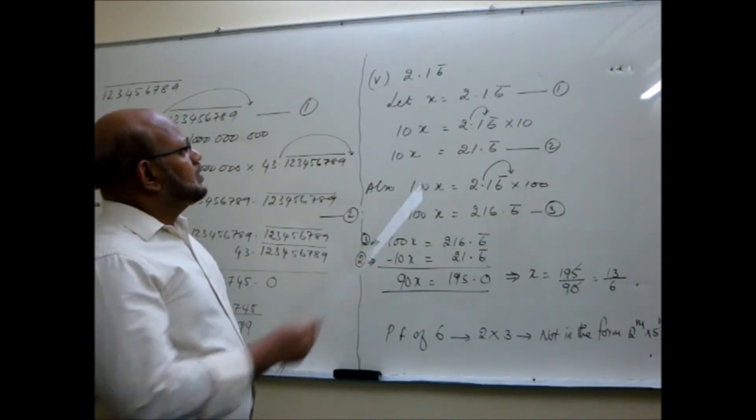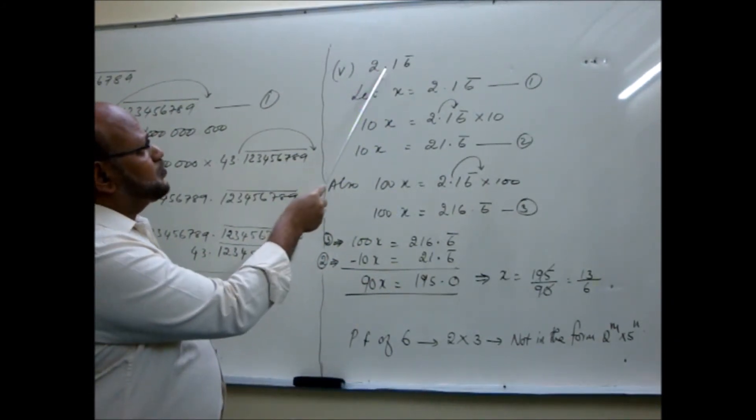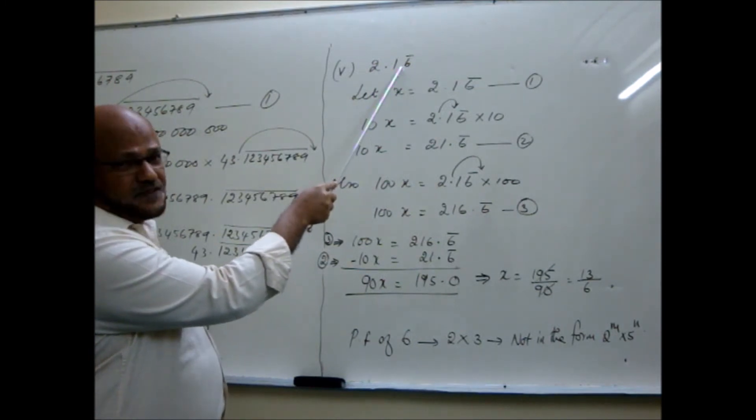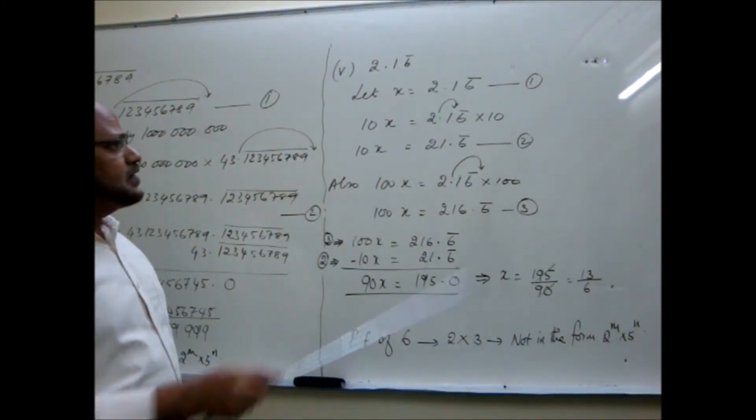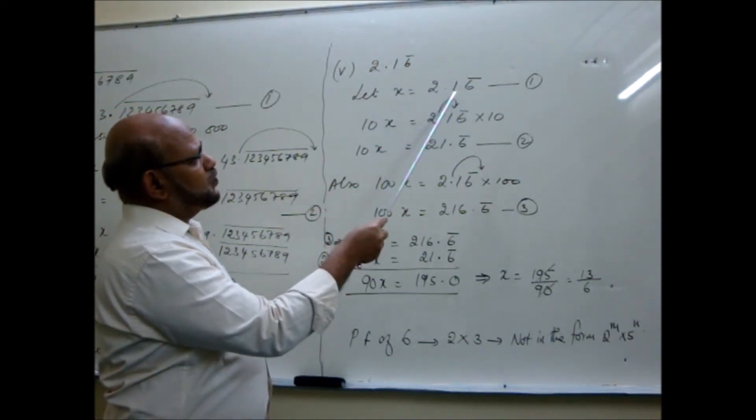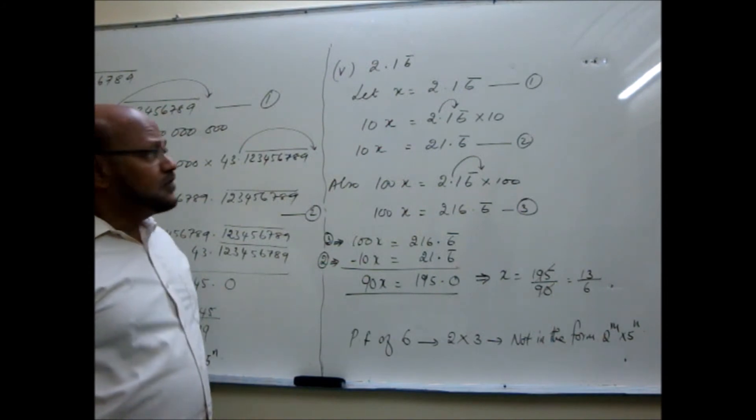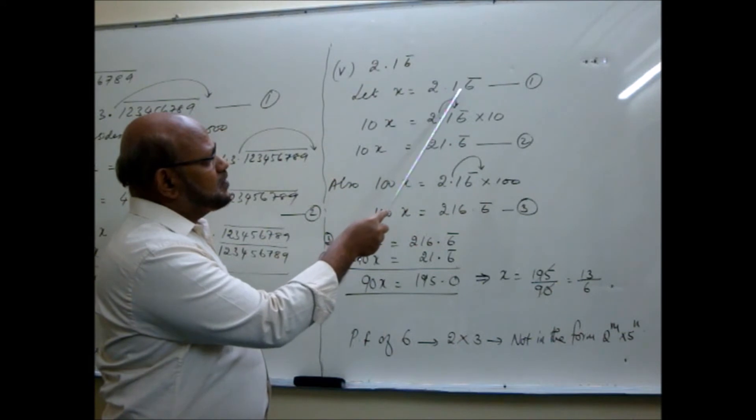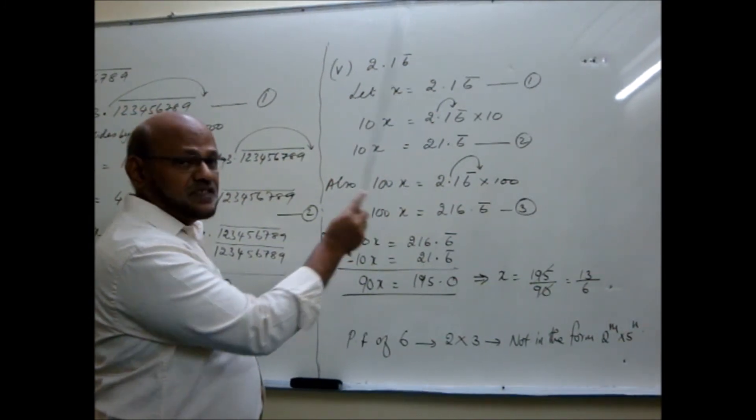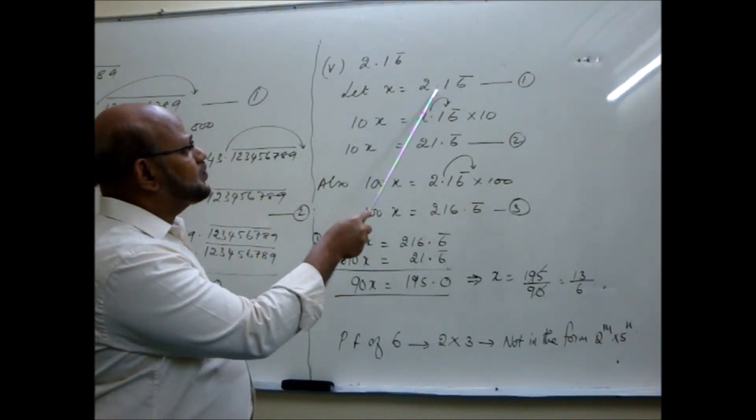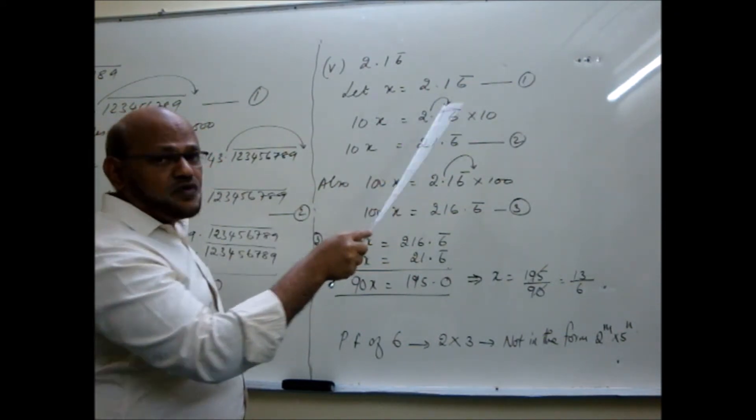Let us take just one more example. This is 2.1 then 6 bar. Here also you are going to write it in the form P by Q. Now I have taken here, see, after 2.1, this 1 is not repeating. Only the 6 is repeating. 6 bar means 6, 6, 6 like that the number goes. So here how you do? Same way, take the given number as x. x is equal to 2.16 bar. Then you have to make two new equations. Two new equations you have to make. What you have to do? One equation should bring this point just before the repeating factor, means this point should come just before the 6 bar. This is one equation. The next equation I am making, I should bring the point after the repeating factor, over here, after 6. Then you will have 6 bar again.